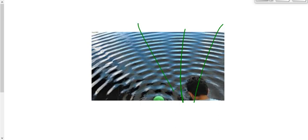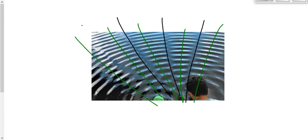Notice the interference pattern that forms. We get areas of constructive interference — bigger crests and bigger troughs, bigger waves. But in between, we get areas of destructive interference: the complete cancellation of the waves. The water is just calm there. This is constructive and destructive interference as a result of diffraction happening twice — through two different openings — and then the spreading waves interfering with each other.